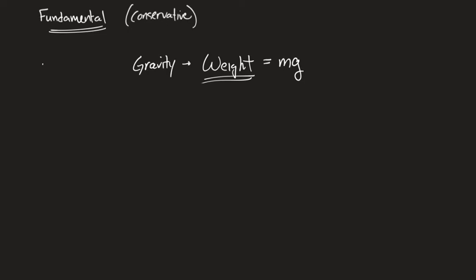Whenever we have the weight of an object in a problem, we will replace weight with mg. I will use a capital W for weight in our problems. Your book wants you to use F with a little w or g subscript, but I'm not going to do that — if there are five items it becomes FW1, FW2, FW3, which is a lot of subscripts. So W represents weight.